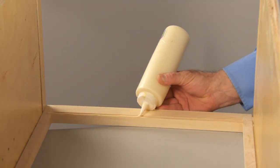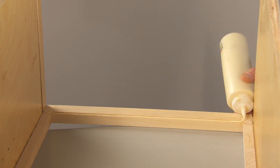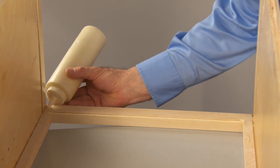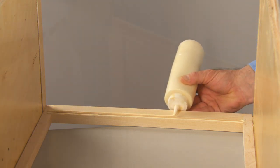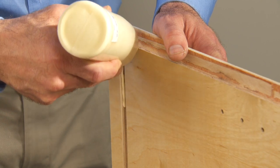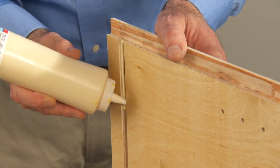Apply a bead of glue to both sides of the spline groove in the rails of the front frame, and one-third of the way down in the female dovetails of the sides.